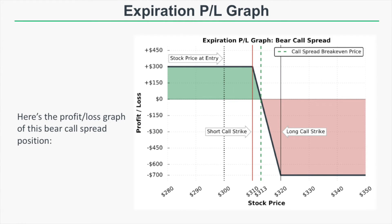Looking at the expiration risk profile graph: our short call strike is 310, our long call strike is 320, and our break-even price is 313. That's because we sold the 310/320 call spread for a net credit of $3, and the break-even is the short call strike price plus the $3 credit, which comes out to $313.